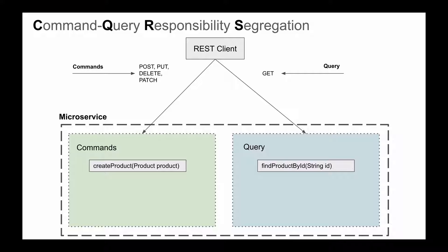But it's not only about HTTP requests coming from a REST client. As we continue working with the CQRS Design Pattern in this video course, you will see that commands and queries are how communication will be done within a microservice and also between microservices. Whenever we want a microservice to execute a certain task, we will issue a new command. And whenever a microservice needs to return some information from a database, we will use a query API.